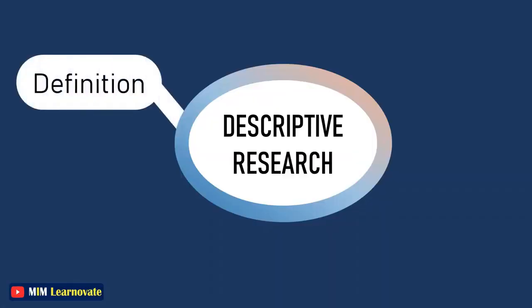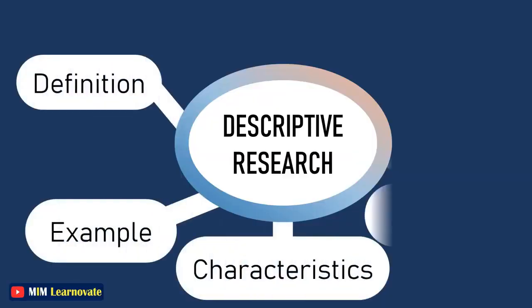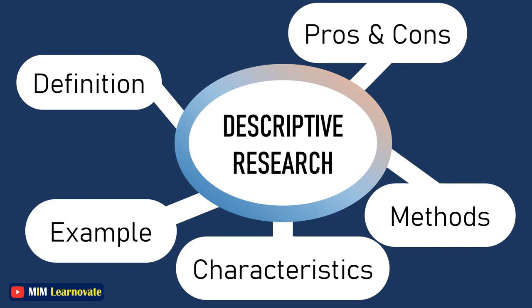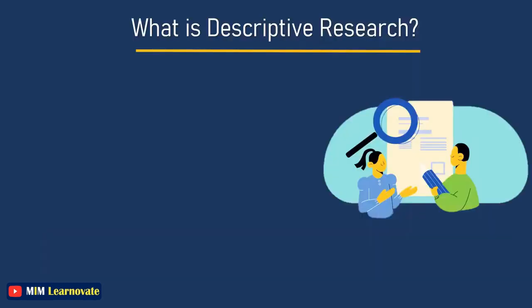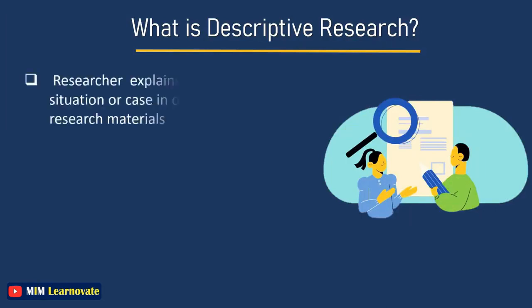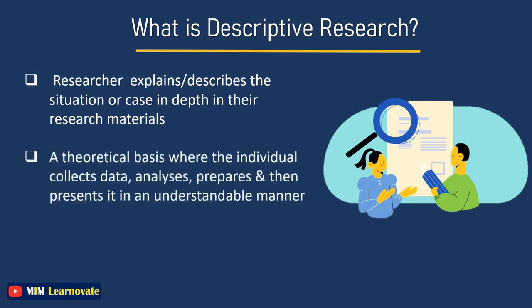Descriptive research — definition, example, characteristics, methods, and pros and cons. In descriptive research, the researcher describes the situation or case in depth in their research materials. This type of research design is on a theoretical basis where the individual collects the data, analyzes, prepares, and then presents it in an understandable manner. It is a more generalized form of research design.